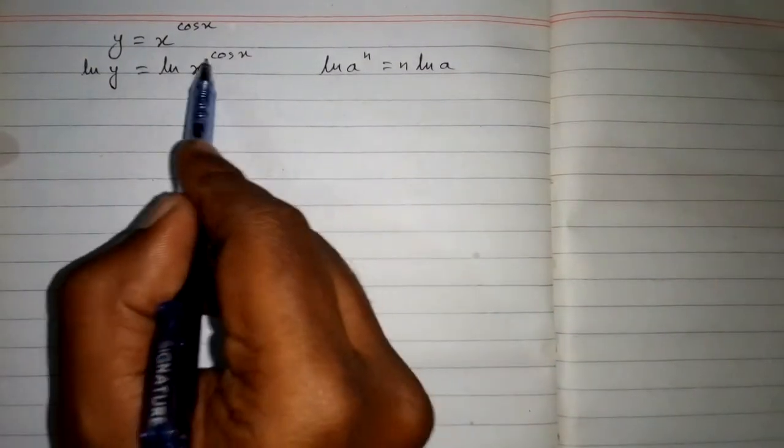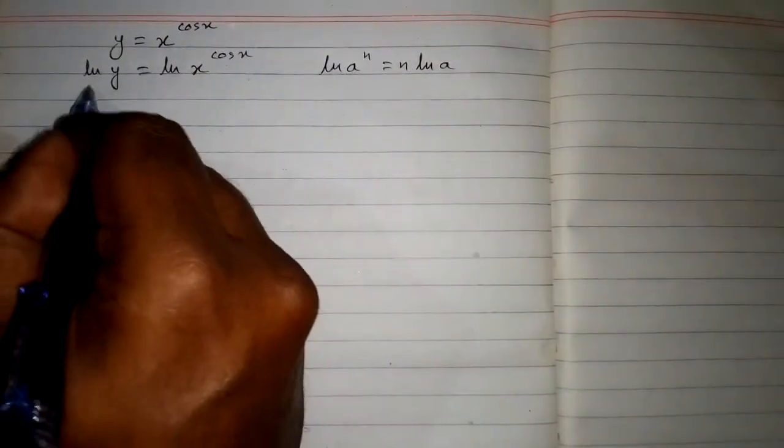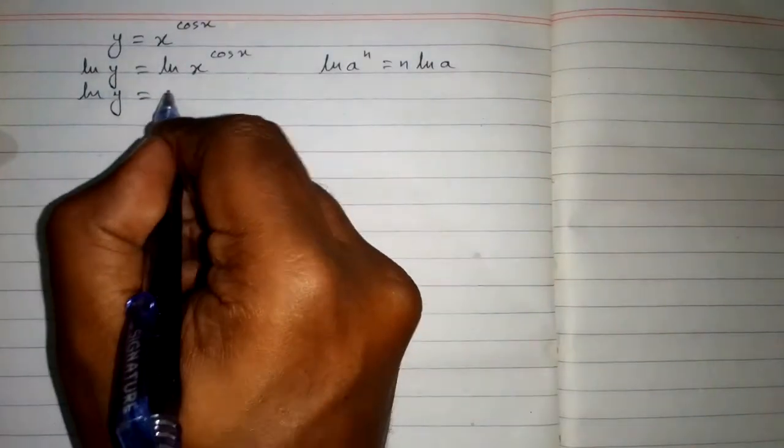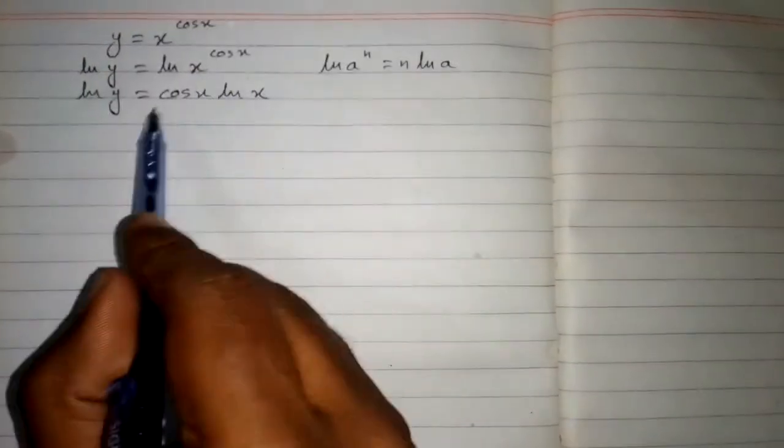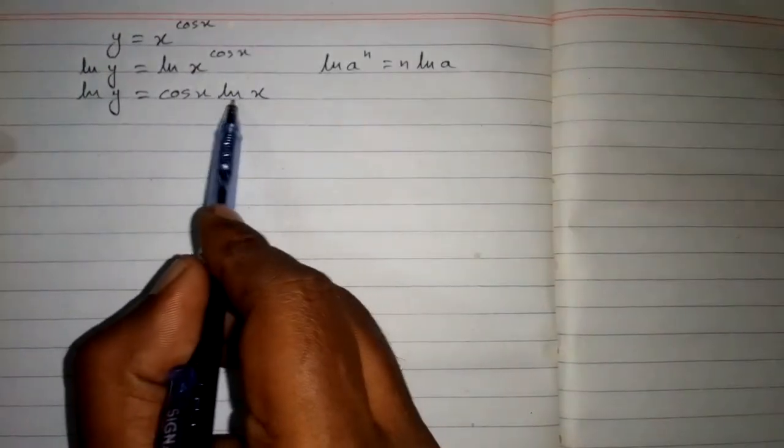So here we will write ln of y equals cos x times ln of x, because the power will become the coefficient of ln of x.